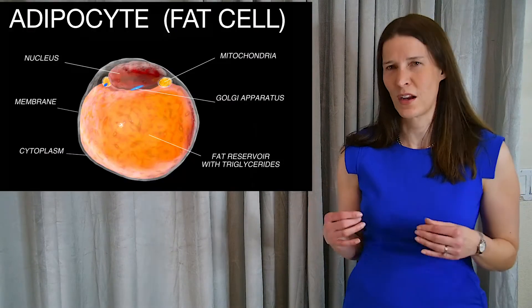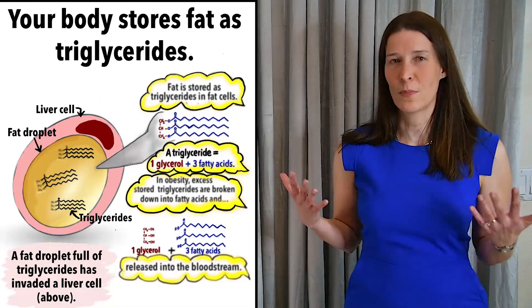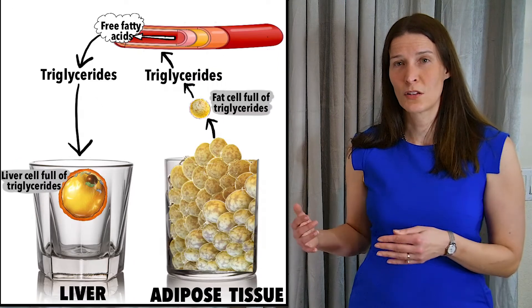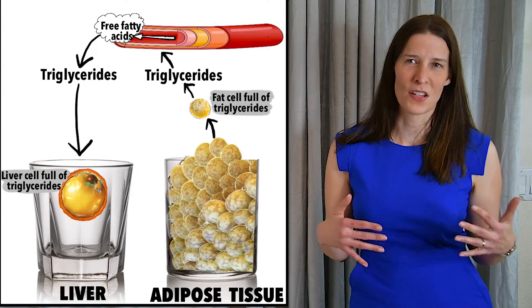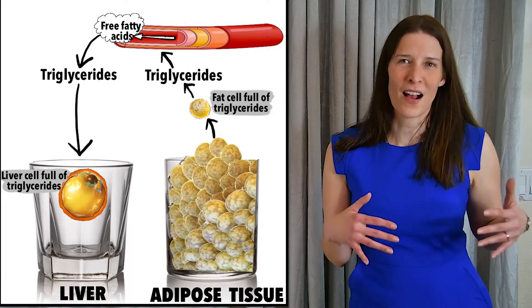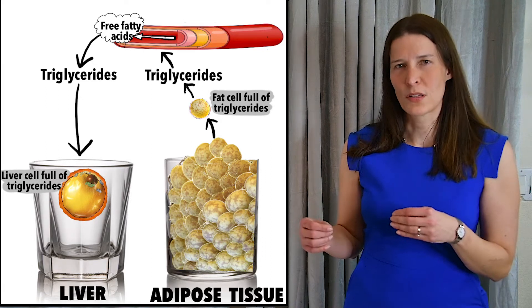The body stores excess energy as fat. Normally, it is stored as triglycerides in the adipose tissue. Once the amount of fat in the body has exceeded the storage capacity of the adipose tissue, the triglycerides — the storage form of fat — are broken down into free fatty acids, which then travel through the bloodstream to the liver. The extra fatty acids are once again packaged into triglycerides and stored inside lipid droplets inside the liver cells, or hepatocytes. Your liver is not supposed to store fat, and eventually the fat overload causes dysfunction.